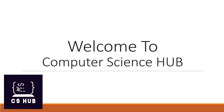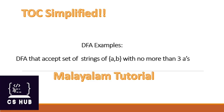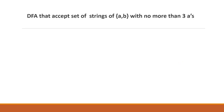Hello everyone, welcome to another video of Computer Science Hub. In this video we are discussing an example of DFA - Deterministic Finite Automata. Our subject is Theory of Computation, and in this example we are designing a DFA that accepts the set of strings over {a, b} with no more than three a's.